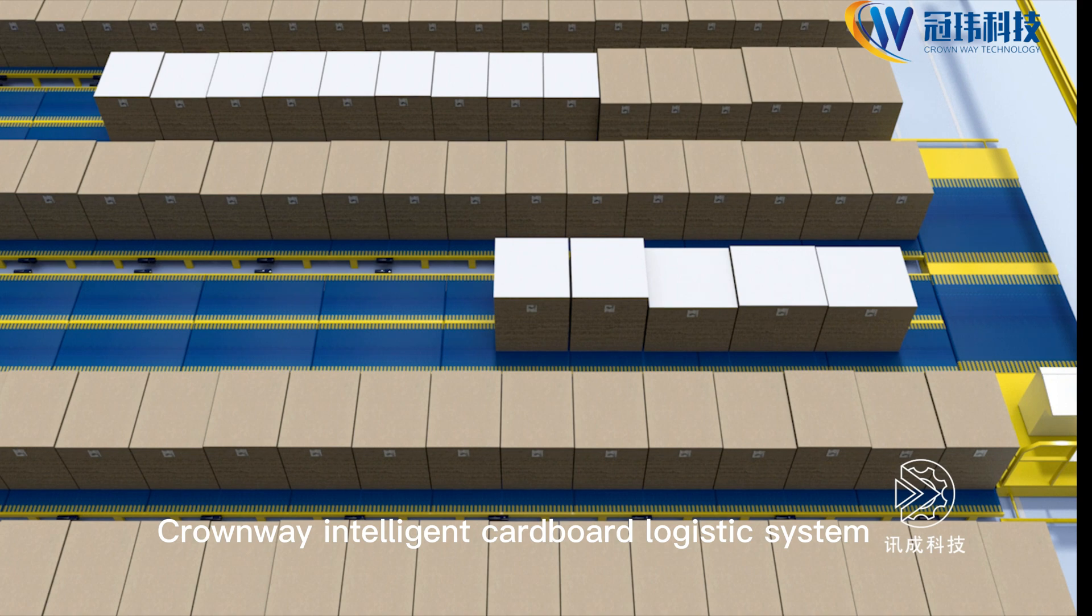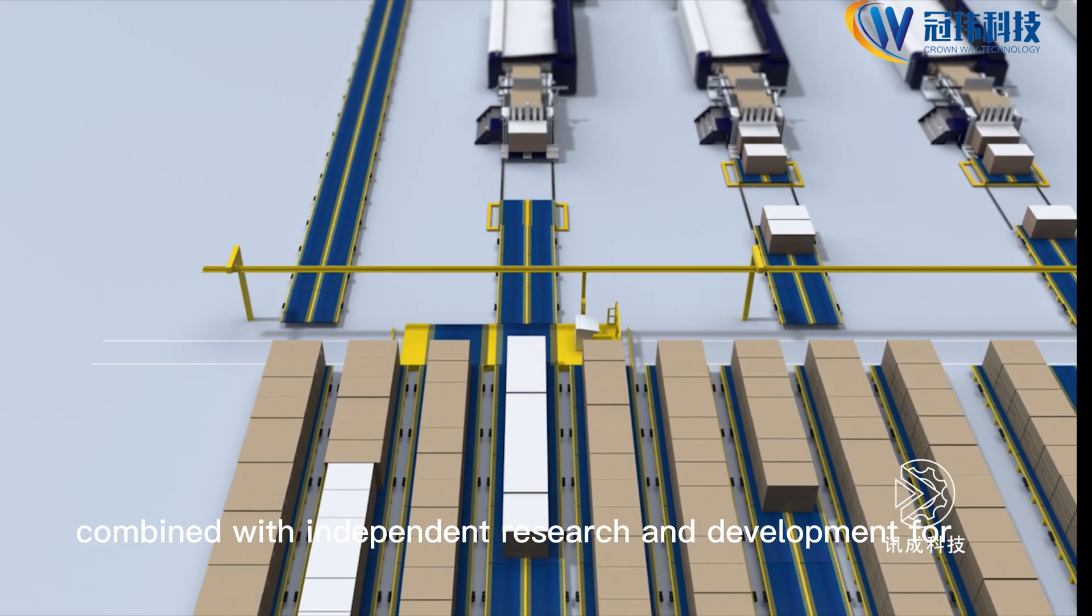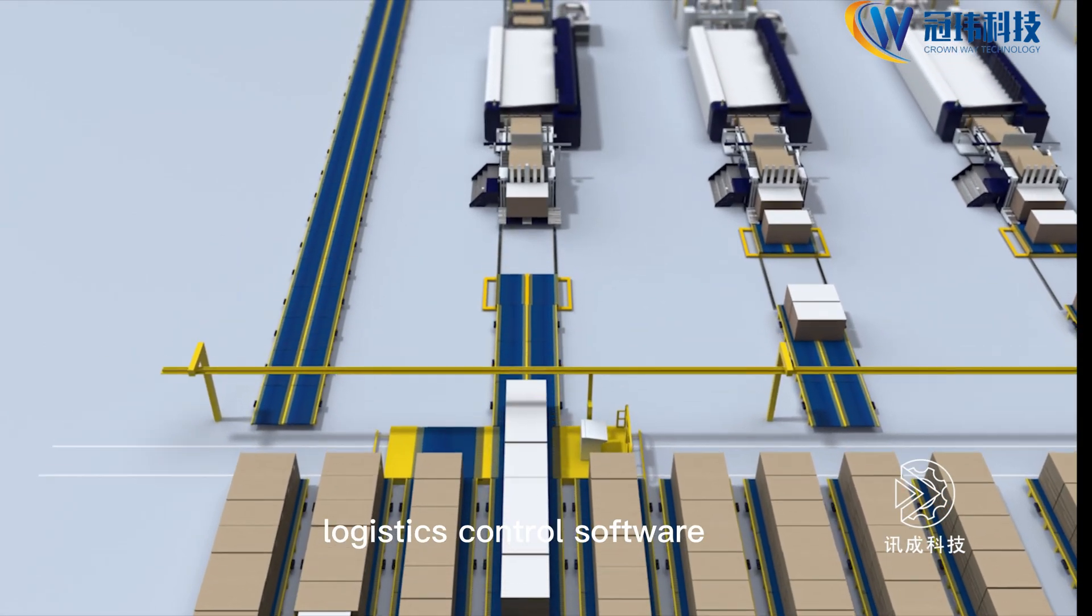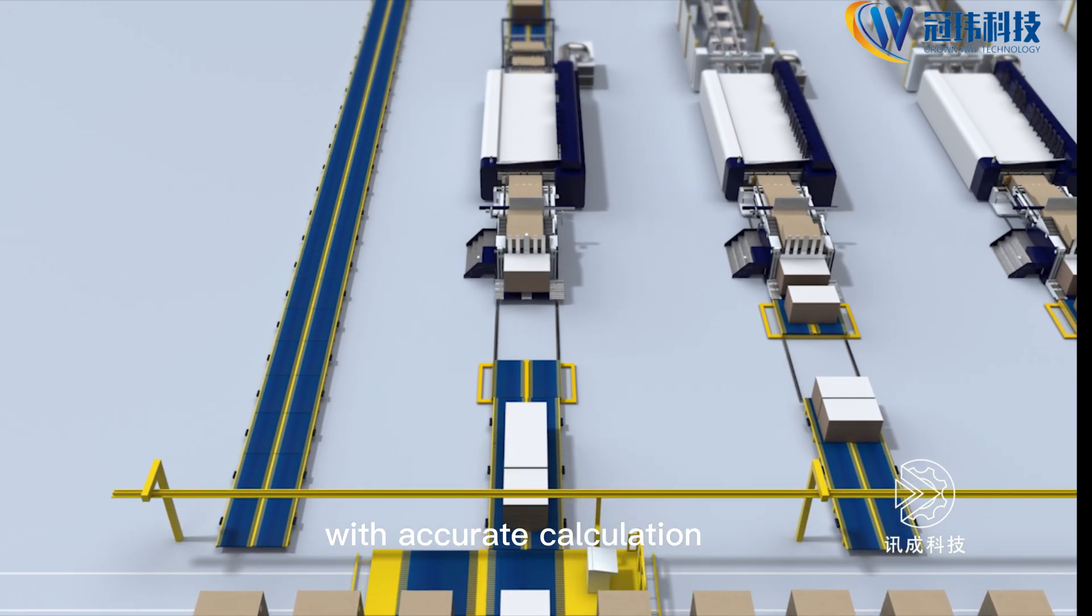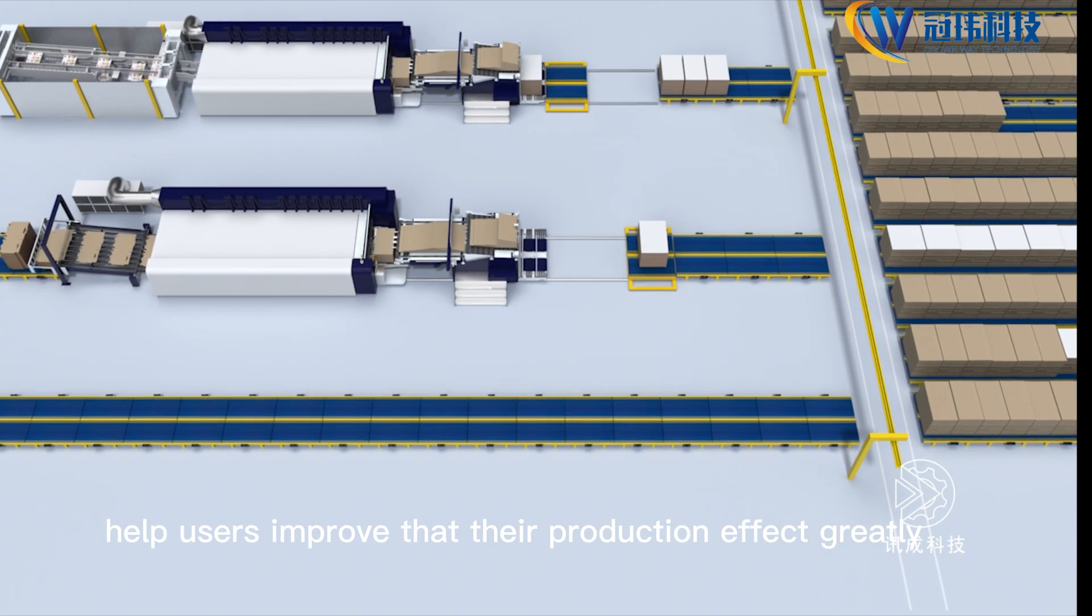Groundway Intelligent Cardboard Logistics System, combined with independent research and development for logistics control software, with accurate calculation, helps users improve their production effect greatly.